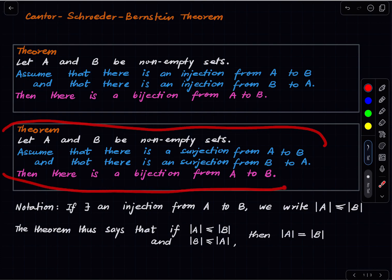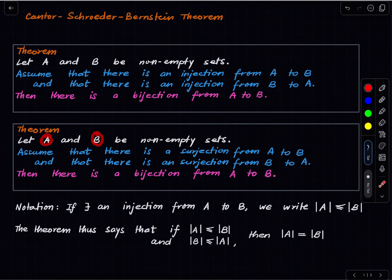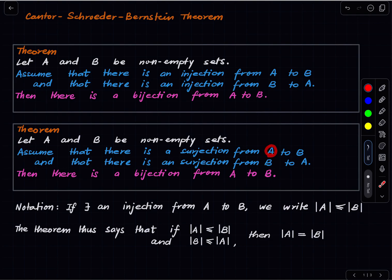An equivalent formulation of the theorem is in terms of surjections. So here we have two non-empty sets A and B, and if there is a surjection from A to B and a surjection from B to A, then also there is a bijection from A to B. Going from one version to another is very simple because having a surjection from A to B implies that we have an injection from B to A, and similarly for the other direction. So the equivalence of these two statements is clear.